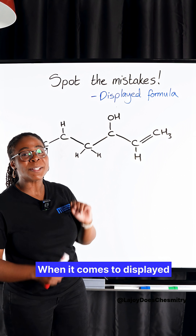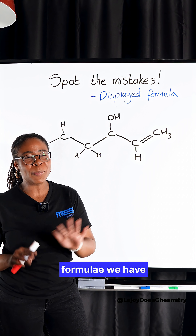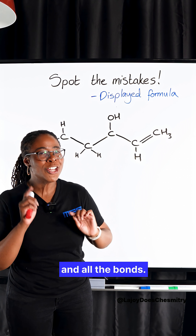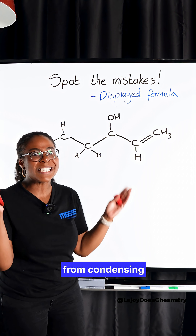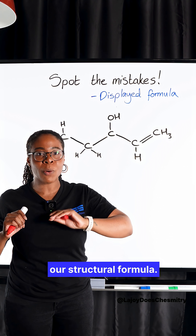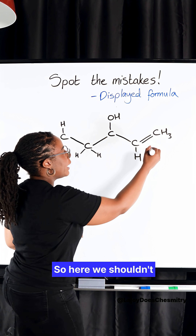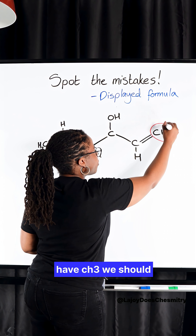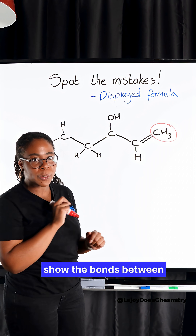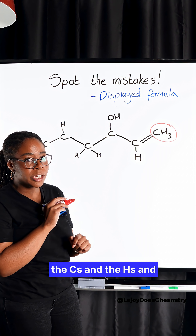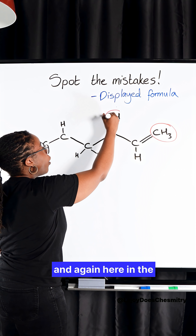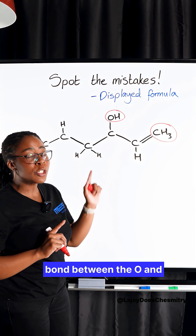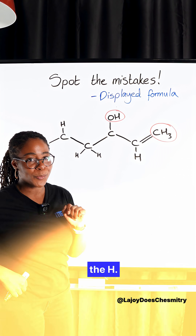When it comes to displayed formulae, we have to show all the atoms and all the bonds. So our first mistakes come from condensing our structural formula. Here we shouldn't have CH3 — we should show the bonds between the C's and the H's. And again, in the OH, we should show the bond between the O and the H.